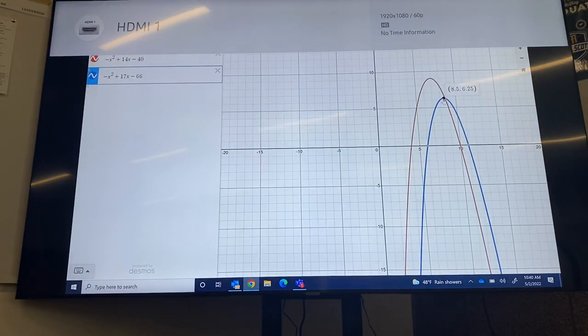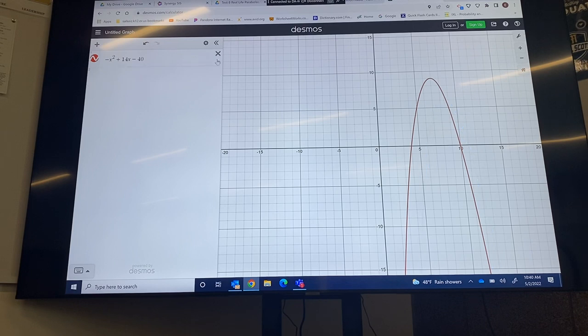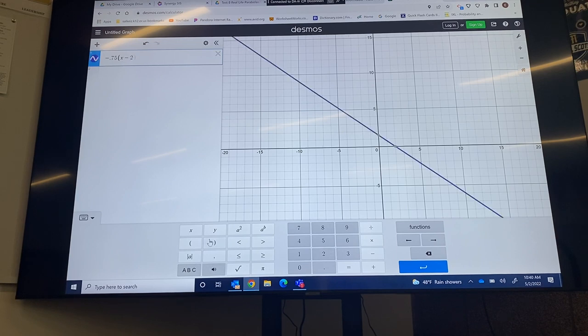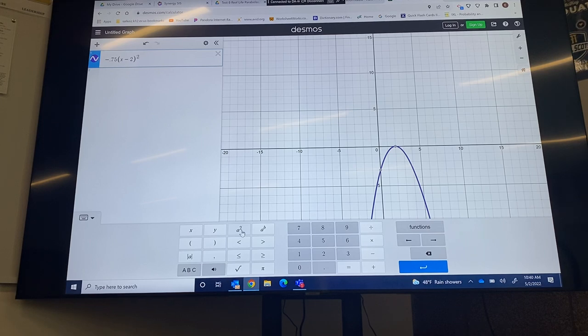All right, so we're back in Desmos. I'm going to just X out of these two equations and then I'll enter in my new one. So negative 0.75, parenthesis x minus 2 - see there's parentheses here - and then that's squared, and then plus 4.